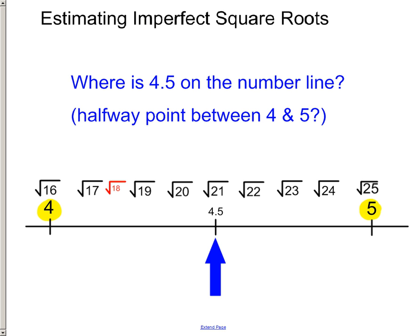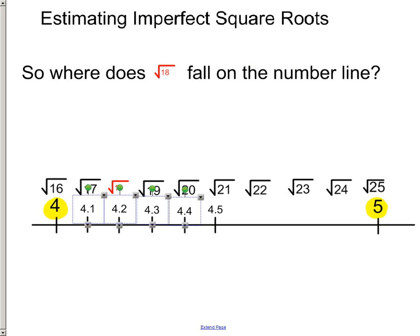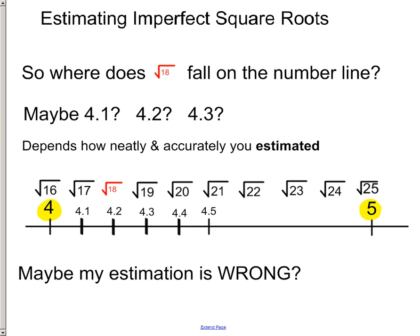And so, now I can use the same idea of saying, well, the square root of 16 is 4, the square root of 25 is 5. This would be about 4.5. These numbers would be right in the middle, closer to 4.5. What about the square root of 18? Where does that fall? Then I went from here to 4.5, and I kind of divided them up as best as I could. And it looks like 4.2, 4.1, 4.3.